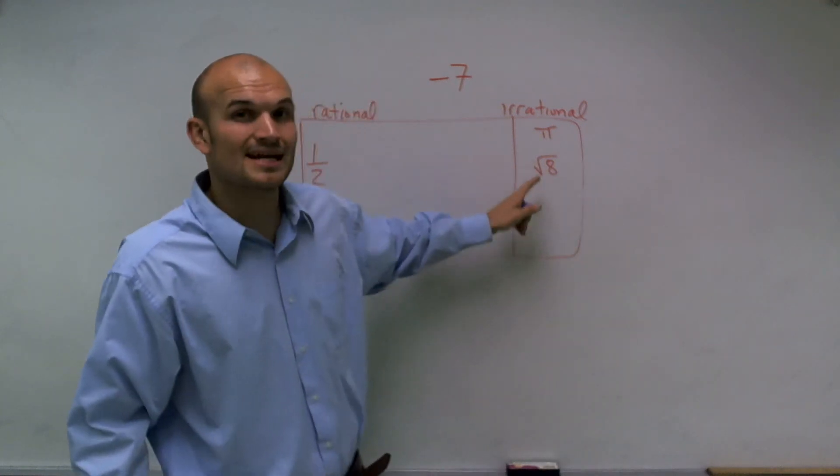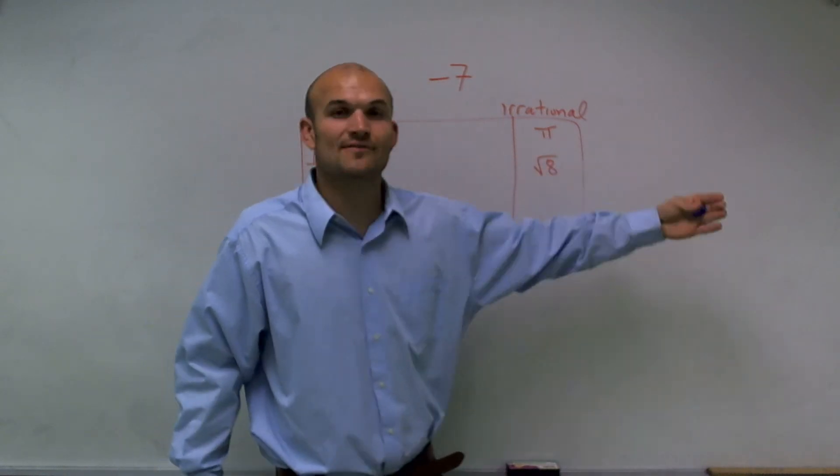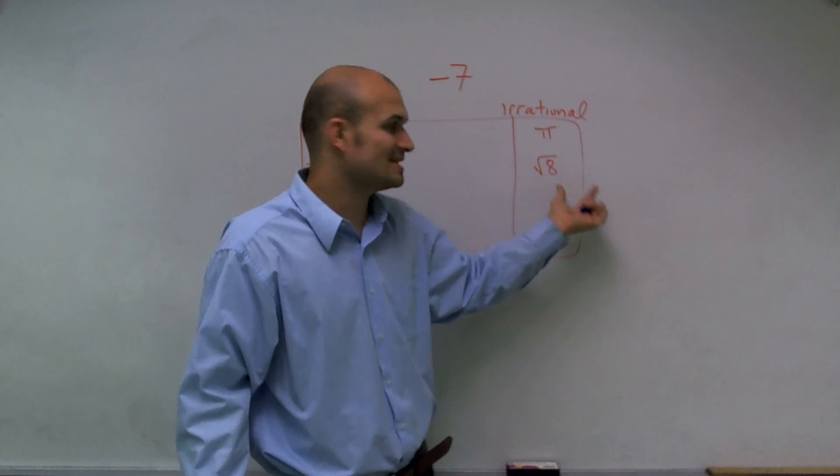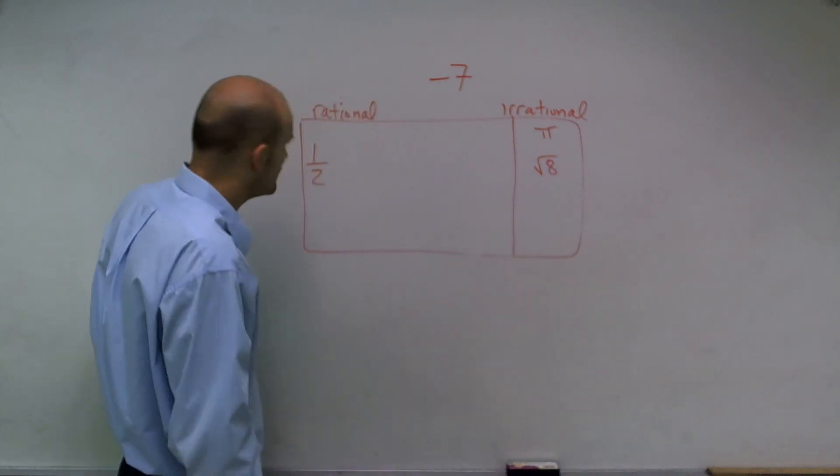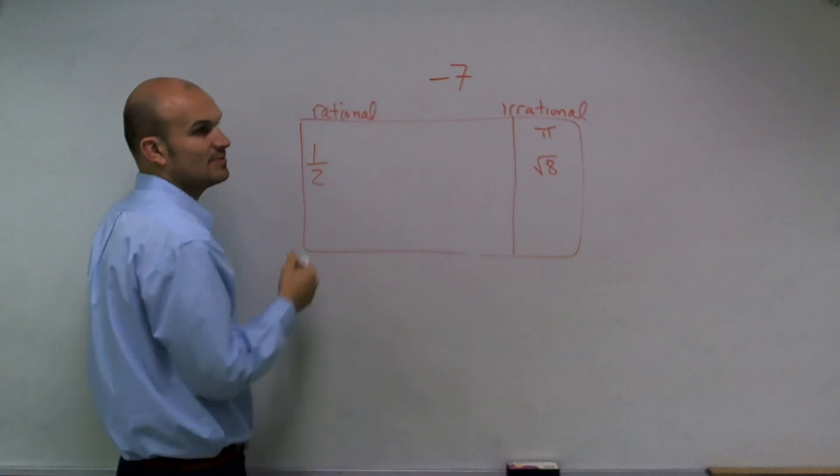We have to represent it as the square root of 8, because the exact value of that, it goes on forever, and we can't actually compute the exact value. So we look at this, and we say, all right, where is this going to be? It's obviously going to be on the rational side.